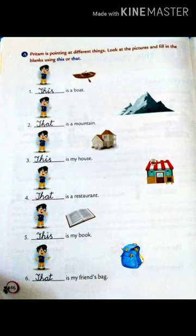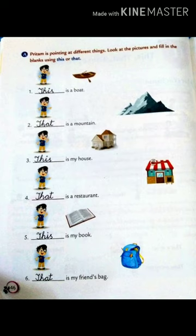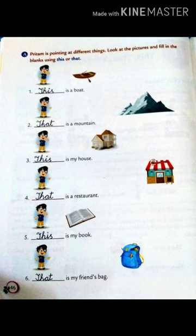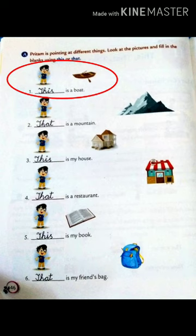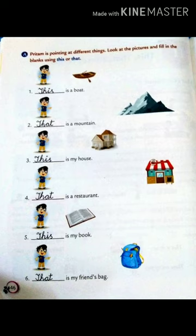Pritam is pointing at different things. Look at the pictures and fill in the blanks using this or that. Number one is: dash is a boat. You will fill here 'this', because the boat is near to Pritam. This is a boat.